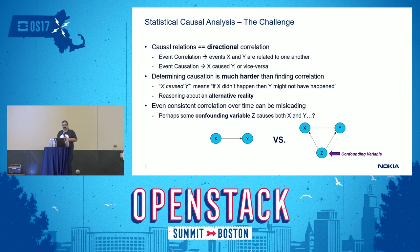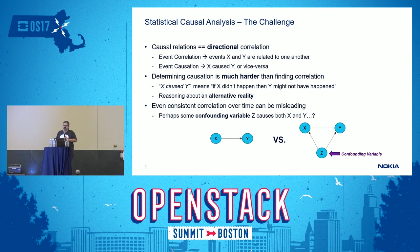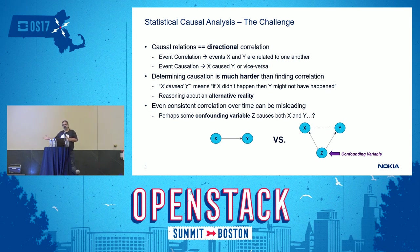Let's talk about statistical causal analysis. The main challenge is that when we talk about causal relationships between events, we can have two events X and Y and say X causes Y. But it doesn't have to always be that way — Y can cause X, or there might be a confounding variable outside the system causing both events. Correlation between events is easy to find: if we see X appearing and then Y appearing after X, we say X causes Y. But actual causation is very difficult to determine, and even very consistent correlation over time can be misleading.